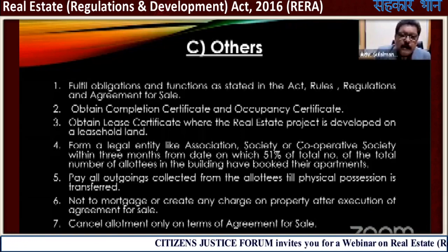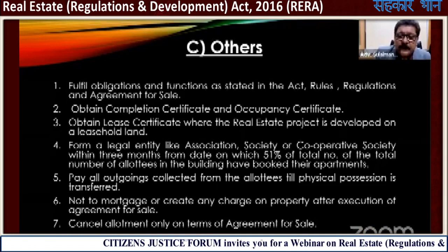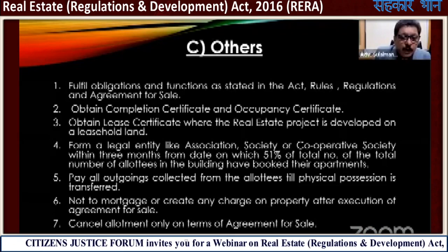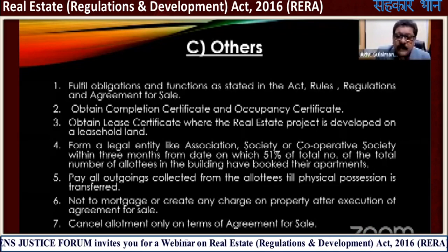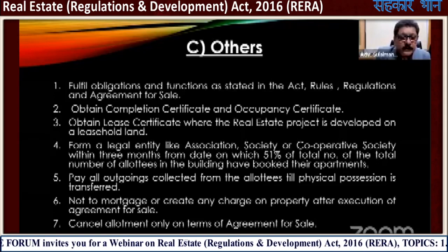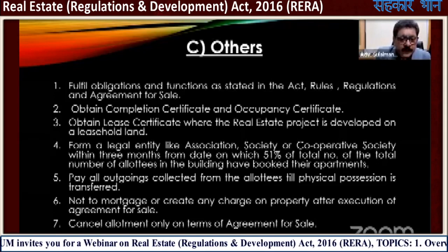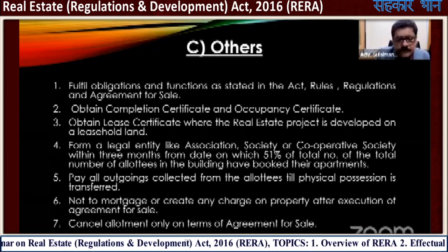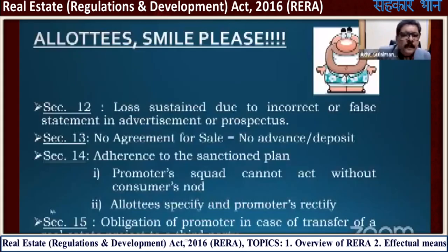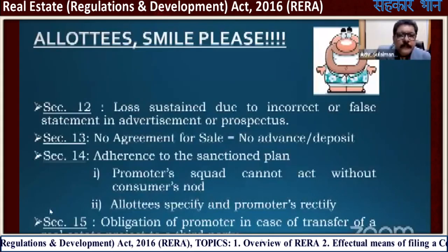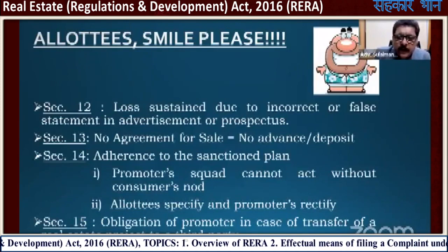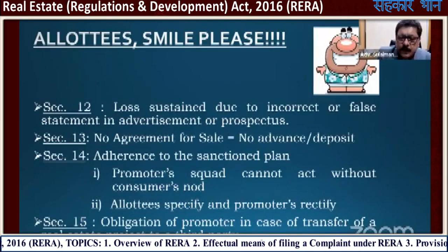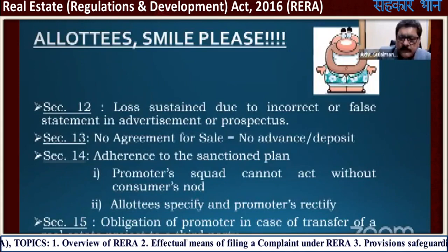The promoter must pay all outgoings collected from the allottee till physical possession is transferred. He must not mortgage or create any charge on property after execution of the agreement for sale. He can cancel allotment only on the terms of the agreement for sale. Section 12 — loss sustained due to incorrect or false statement in the advertisement or prospectus.